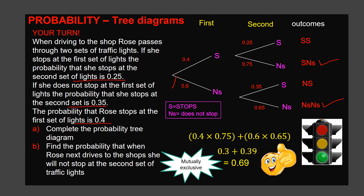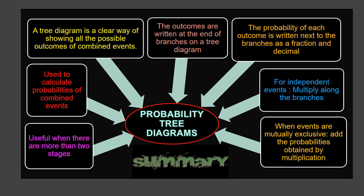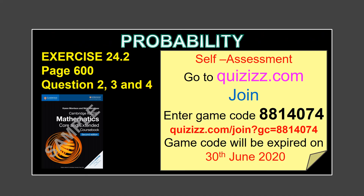That's all about tree diagrams. Let's summarize our lesson. A tree diagram is a clear way of showing all the possible outcomes of combined events. It's used to calculate probabilities of combined events and is useful when there are more than two stages. Outcomes are written at the end of branches. The probability of each outcome is written as a fraction or decimal. For independent events, multiply along the branches. When events are mutually exclusive, add the probabilities obtained by multiplication. Your task: do exercise 24.2, page 600, questions 2, 3, and 4. For self-assessment, go to quizis.com and enter game code 8814074. The code will expire on June 30th.